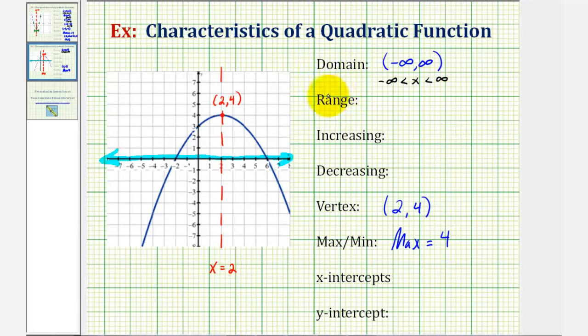The range is a set of all possible y values. Y values occur along the vertical axis. And notice how the largest y value would be the y value of the vertex, which is four. So if we project this onto the y-axis, it would be from negative infinity all the way to positive four.